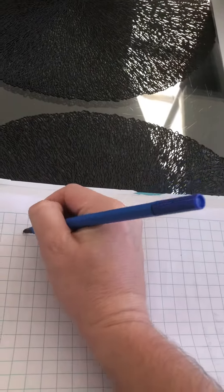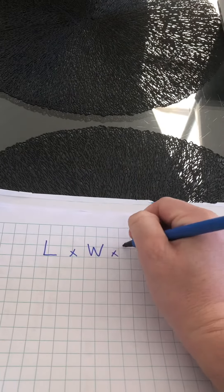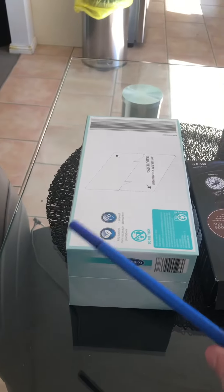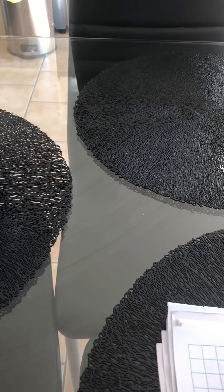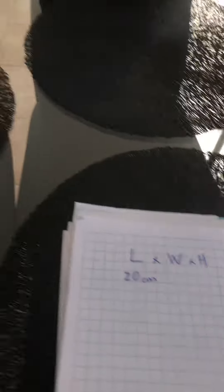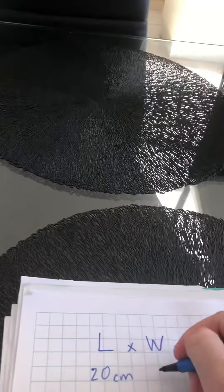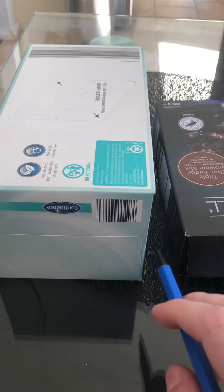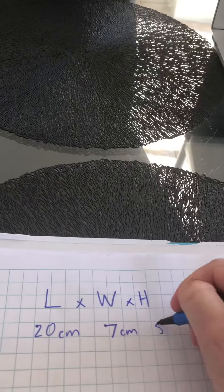The formula is length times width times height. So if I'm having a look at my box here, I measured these out a little bit earlier. The length of my box is 20 centimetres. The width of my box is 7 centimetres. And the height of my box is 5 centimetres.